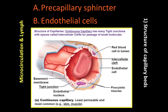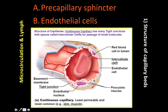At the junction of the arteriole and the capillary, there is a smooth muscle band called the pre-capillary sphincter. The true capillaries, however, do not have smooth muscle — we need to remember that. True capillaries consist of a single layer of endothelial cells, as seen in the figure. The endothelial cells surround the basement membrane, and we can also see the endothelial nucleus in histology.